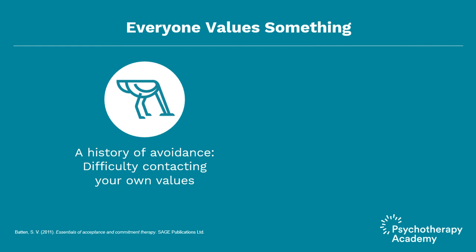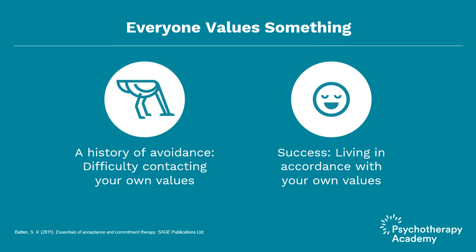Some clients may have such a long history of avoidance or punishment by other people for expressing their desires and preferences that they may have difficulty contacting their own values at first. But within ACT, success is defined by living in accordance with your own values, not by achieving specific goals. So it's really important to help the client get in contact with what is really important to them — what are their individual values?